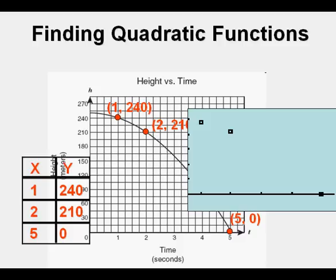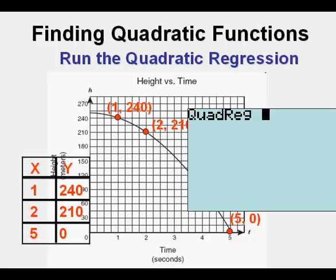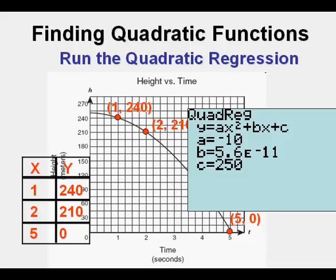Now the next thing we're going to do is go to stat calc. And from here, we're going to run a quadratic regression to find the formula, the function that fits the three points that we've entered under L1 and L2 in our graphing calculator. After we have this view, we press enter. And this gives us our function. We need to transcribe this function, which is negative 10x squared. b is 0 and c is 250. It's going to be negative 10x squared plus 250.